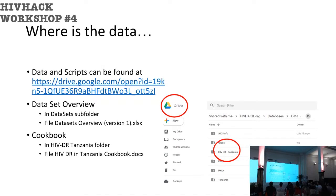So where is this data? In the Google Drive spoken about earlier you'll find all the input data, all the publications, the raw data, the worked-upon data, the final data, and the scripts that allowed producing all of this.